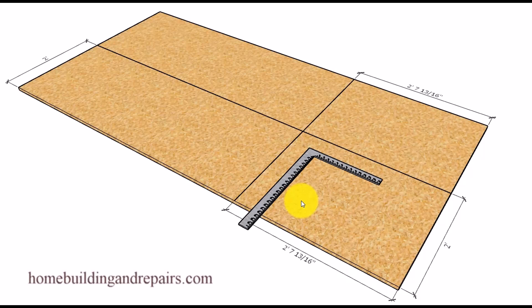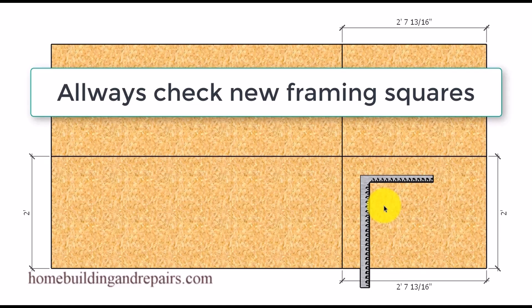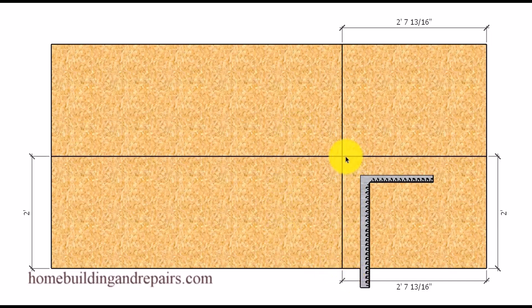In this video I am going to show you what a framing square looks like when it is no longer square and provide you with a couple of ways you can check your framing square to see if it's square. This method works the best: grab a sheet of plywood or something that you know is square and then create some lines that are going to be square.